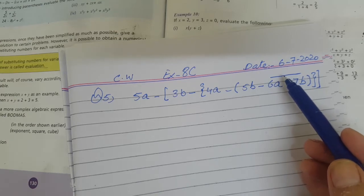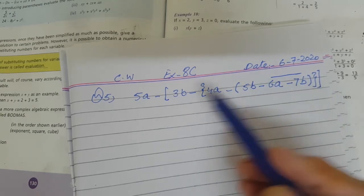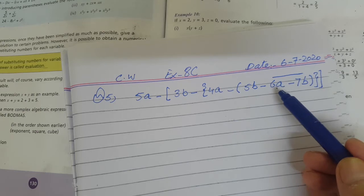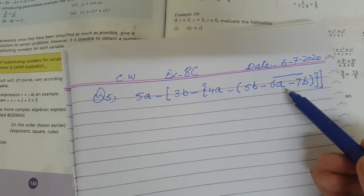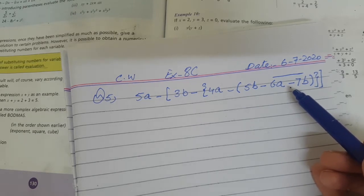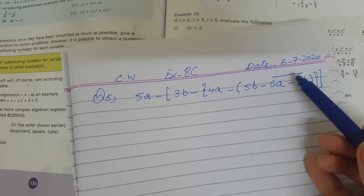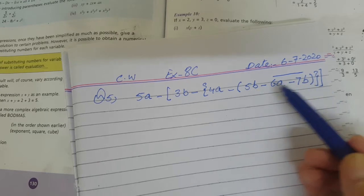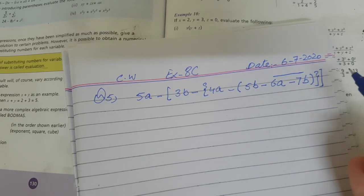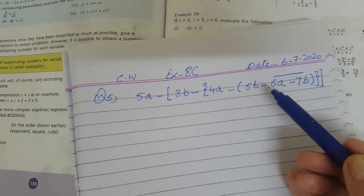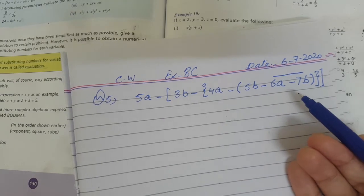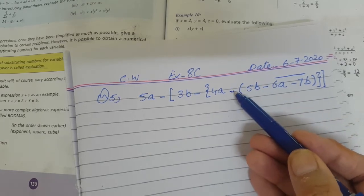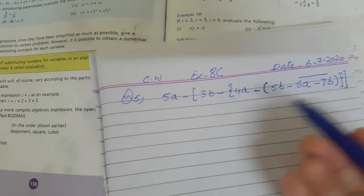We will solve the vinculum first, then the parenthesis, then braces, then the square bracket. When we solve the vinculum first, it means whatever the function we have to do under the vinculum, we do it first. Then after finishing the vinculum, we do the functions inside the parenthesis. If there are like terms, they can be added or subtracted; if not, we take out all the terms with the outer sign given with the parenthesis.